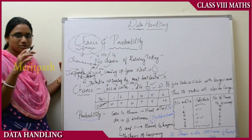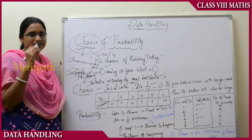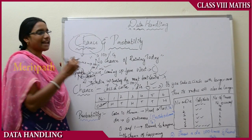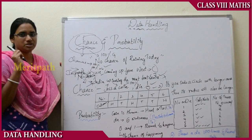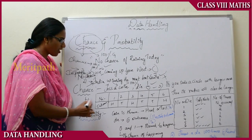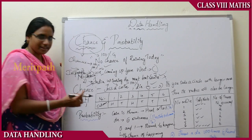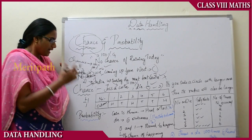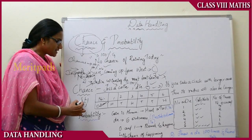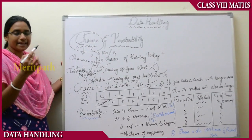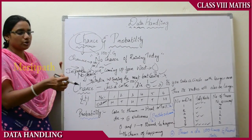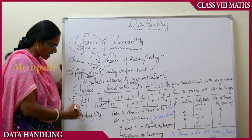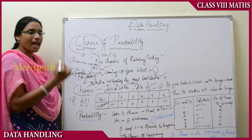Now let us see the chance for different types of elements. If you toss a coin, it has only two options: either head or tail. The chances of getting head or tail when you toss a coin means there are two possible outcomes, so there are two chances.